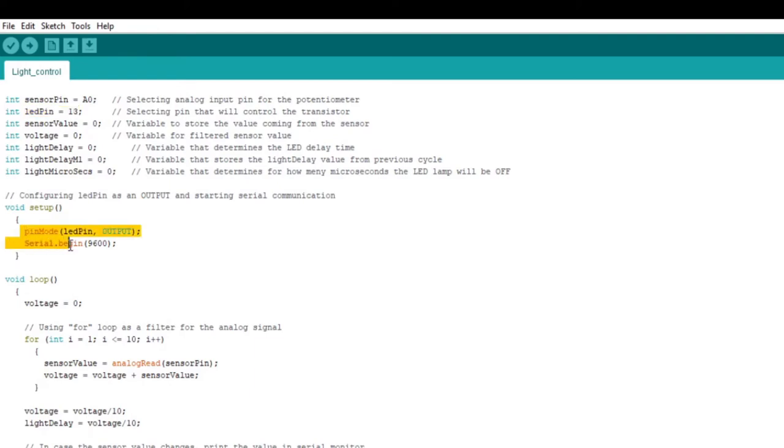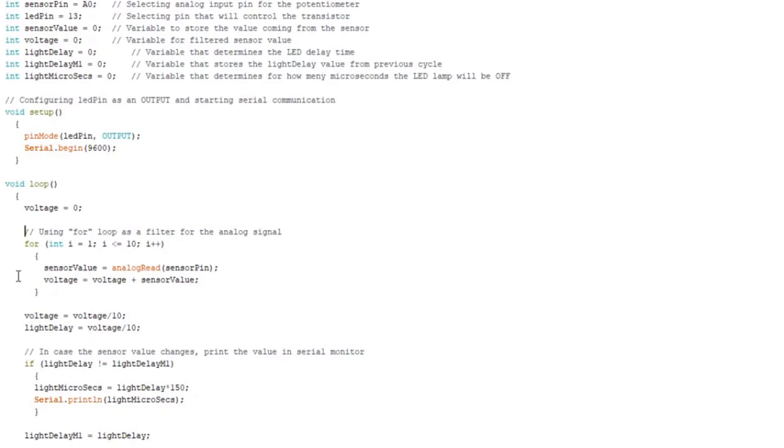In this part of the code we are configuring pin 13 as an output and we are starting the serial communication with the computer. Now we go to the main part of the program.